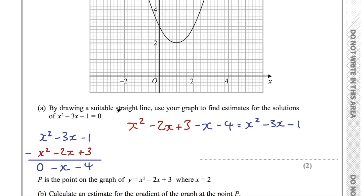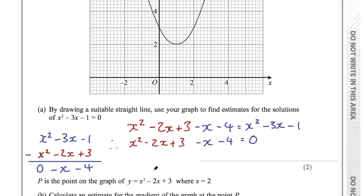The question asks for solutions when x squared minus 3x minus 1 equals 0. So x squared minus 2x plus 3 minus x minus 4 equals 0. That allows us to move the minus x minus 4 to the other side, giving us x squared minus 2x plus 3 equals x plus 4.